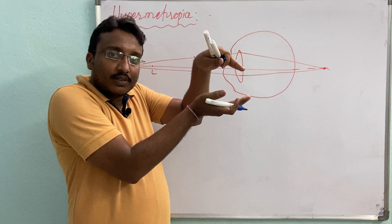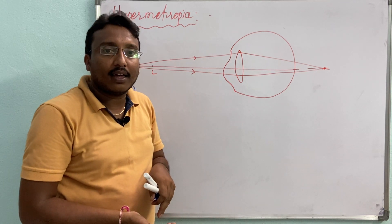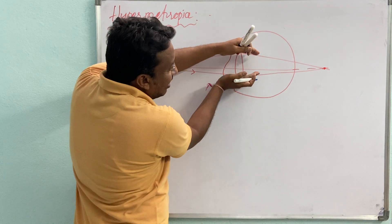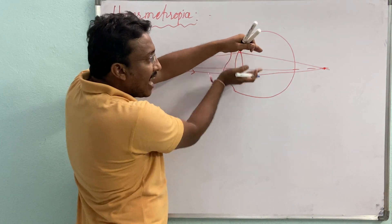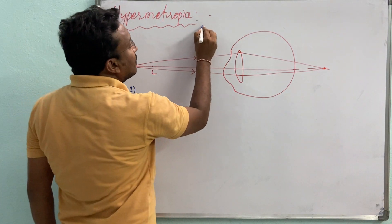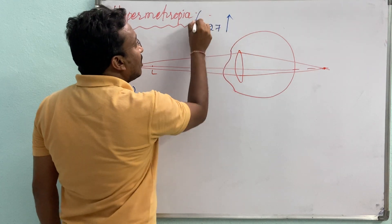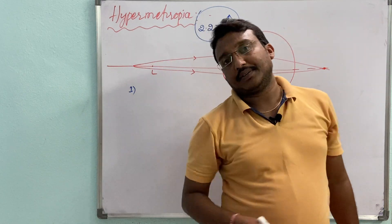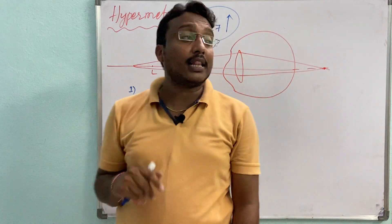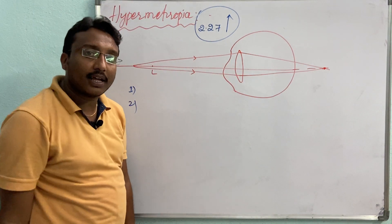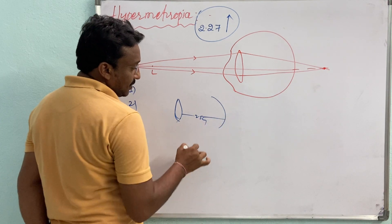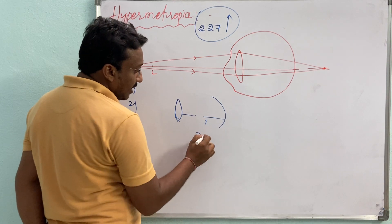One reason is that the flexibility of the ciliary muscle decreases. When objects are closer, the ciliary muscle pushes the lens to decrease its radius of curvature. But in the case of hypermetropia, the ciliary muscle is unable to decrease the radius of the eye lens. This means the minimum focal length is greater than 2.27 cm. Otherwise, the size of the eyeball may be decreased — the distance between the lens and retina, normally 2.5 cm, becomes less than 2.5 cm.